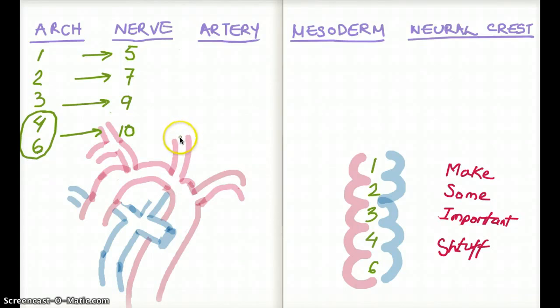Now let's talk about the artery. This is where the mnemonic really plays a good part. So you see how it says make some important, we're going to use until here on our artery mnemonic. So the first one says M, make. So M for maxillary. That's brachial arch 1 gives rise to maxillary artery.